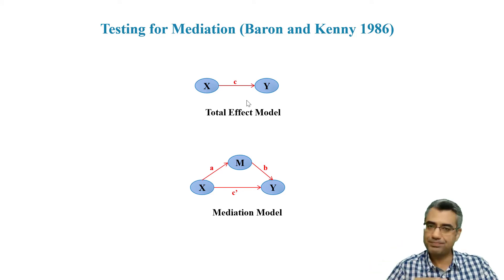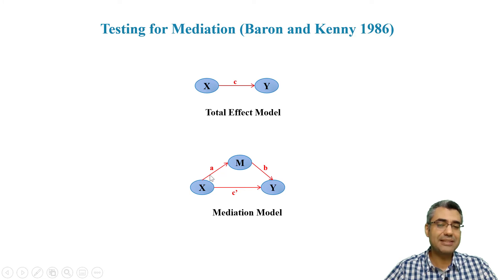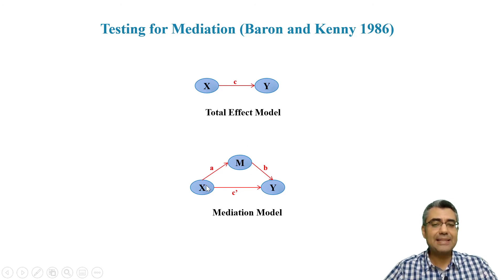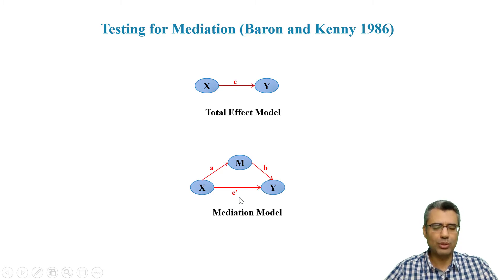If there is no relationship, they say check paths a and b separately — if they are significant there is an indirect effect, but they don't call it mediation. If there really is a relationship between X and Y, then we ask how or why this relationship exists. We add the mediator into the model, and in the new model we see c prime, which is different from c, because part of the effect of X on Y — previously called c — now goes through M. So c prime should be weaker than c.